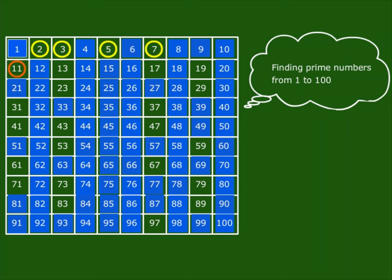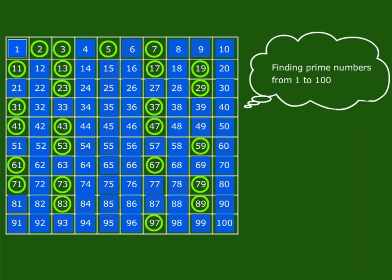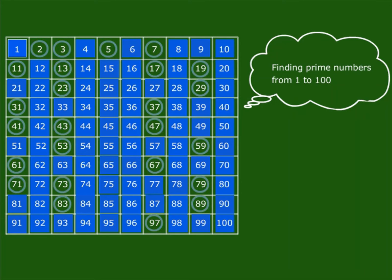Continue this process till all the numbers in the table are either encircled or crossed out. All the encircled numbers are prime numbers. All the crossed out numbers other than one are composite numbers. This method is called the sieve of Eratosthenes.